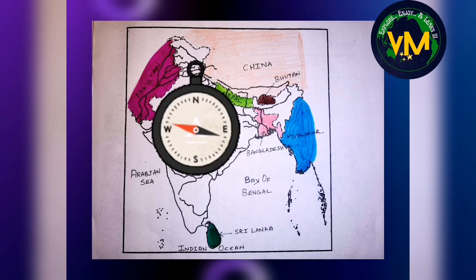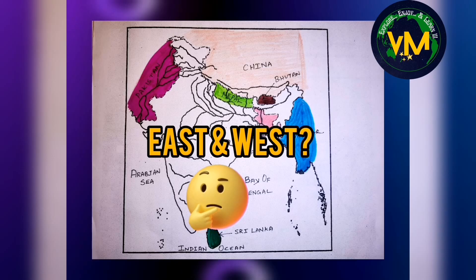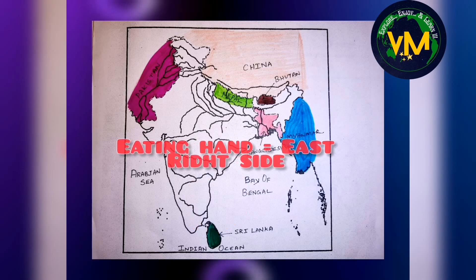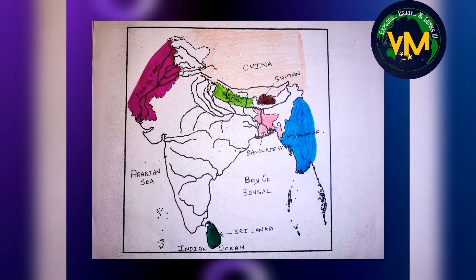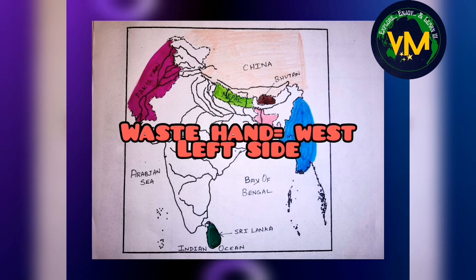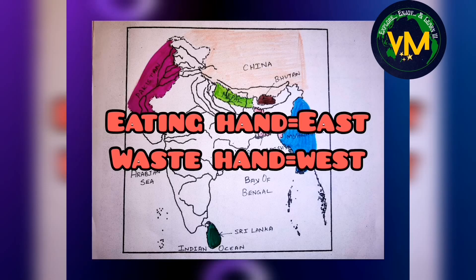Whenever I say the direction as east and west, you may get confused. Here is an easy way to remember the directions. The top is north, just like our head. The bottom is south. To remember east and west, take your hand — your eating hand side is east, that is your right side. And your left hand side, which I used to remember as the 'waste hand' because we don't use it for eating, that is your left side is the west. So remember: eating hand side for east, E and E. And the other hand, the waste hand, is for west, W and W.